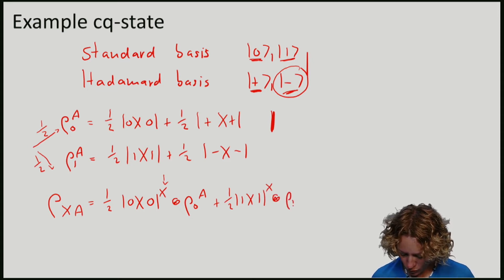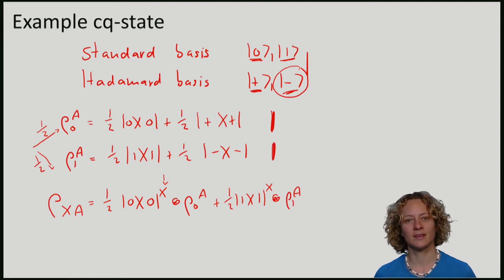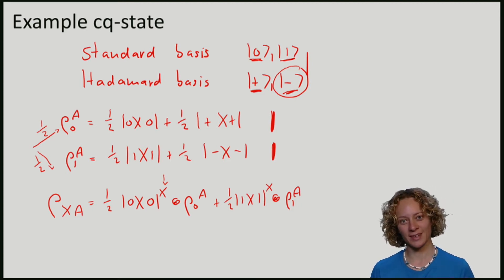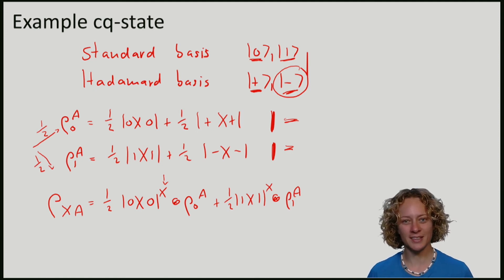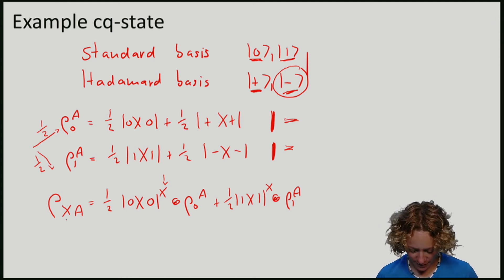So this is the overall density matrix that corresponds to preparing the qubit A in the state ρ⁰ in one of two bits for a randomly chosen basis. This is an example of a classical quantum state where X is classical and A is quantum.